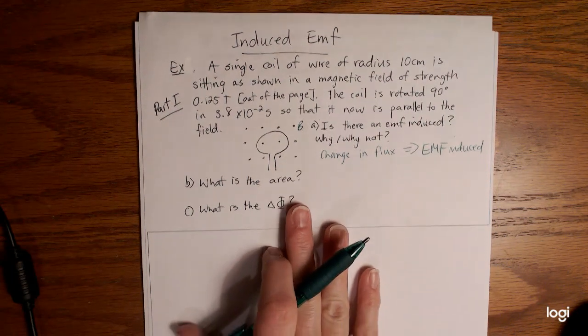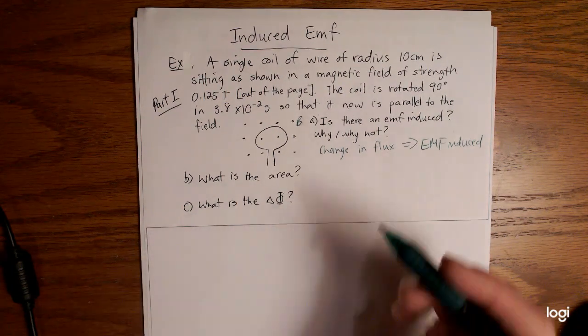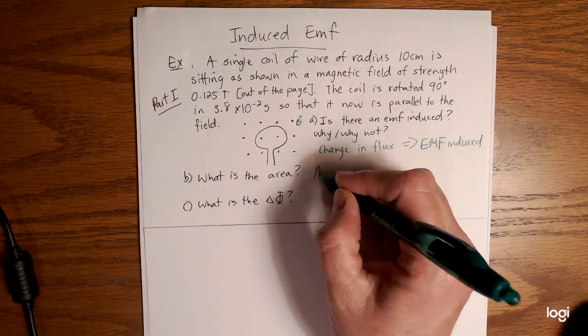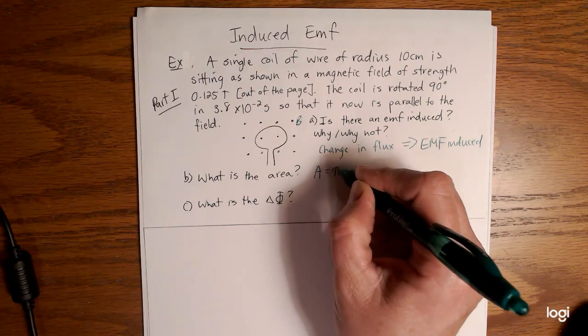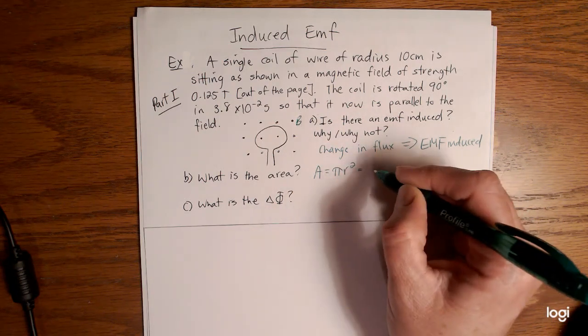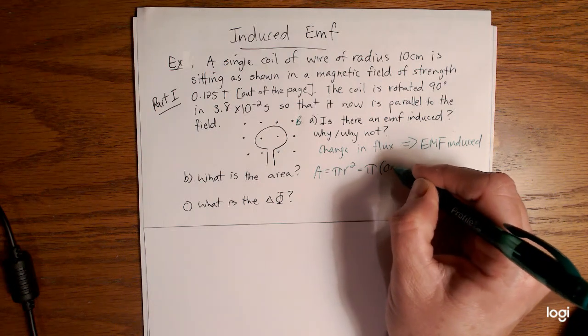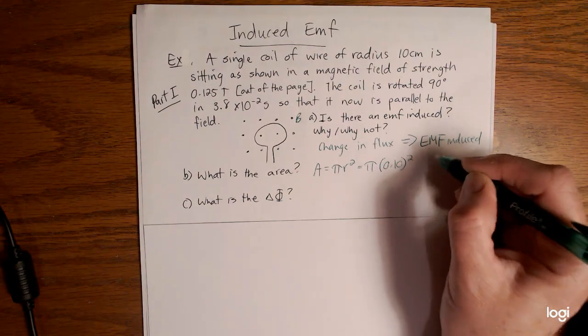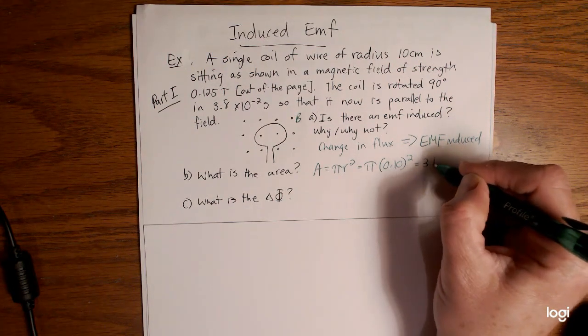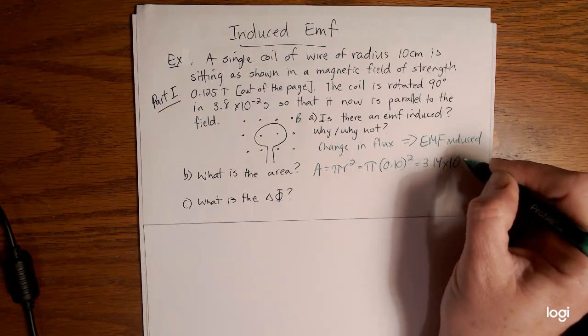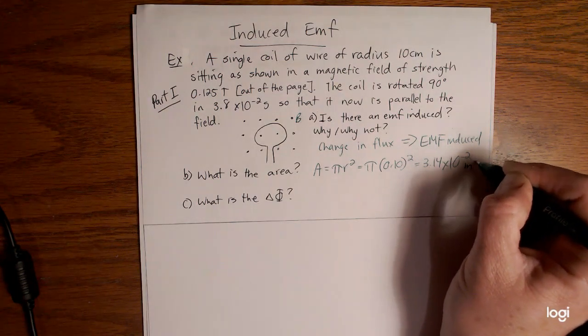So then I asked a couple other questions. What is the area? Well that's a circle so area is equal to pi r squared. So that's pi, make sure you change this into meters. That'll be 3.14 times 10 to the negative 2 meters squared.